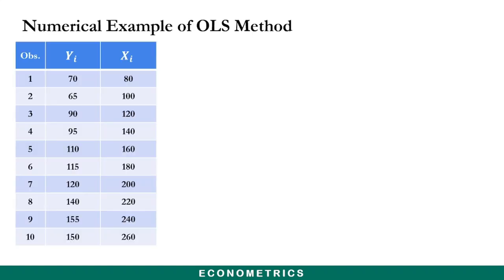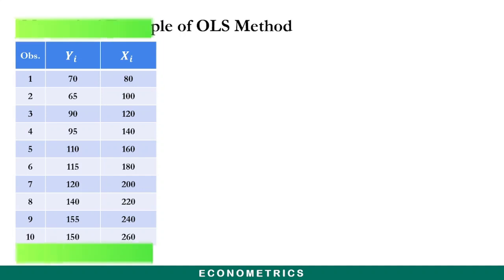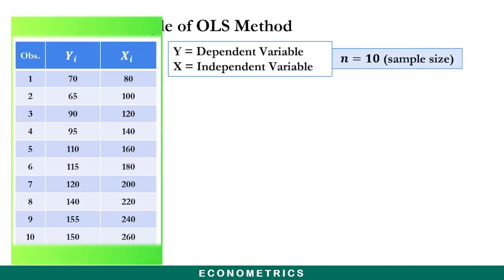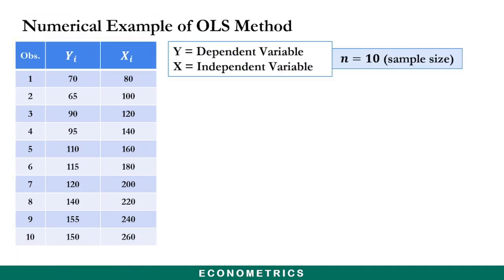We start with a table of three columns: observations, y, and x. Y happens to be the dependent variable, x is the independent variable, and n equals 10, which represents the sample size or the total number of observations.